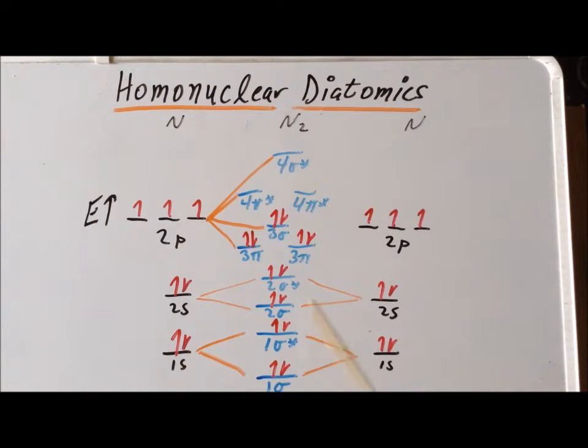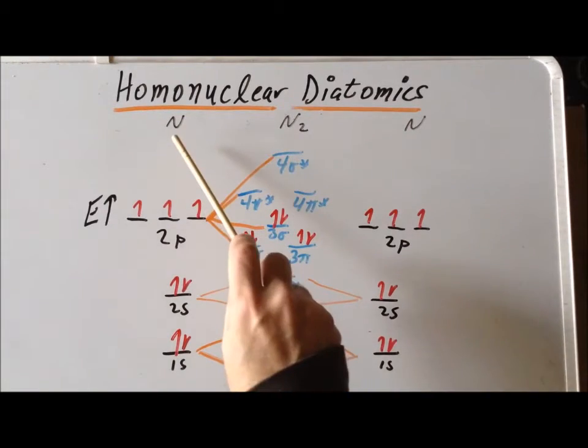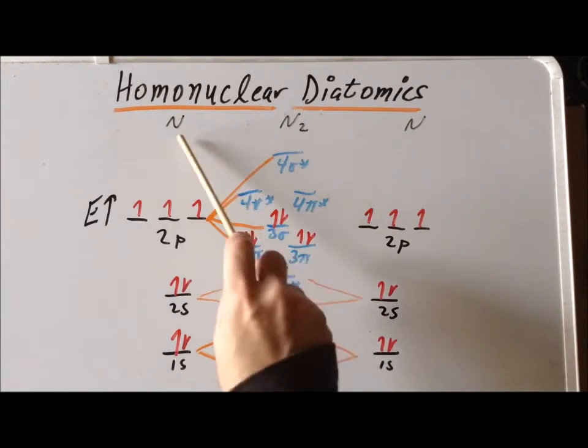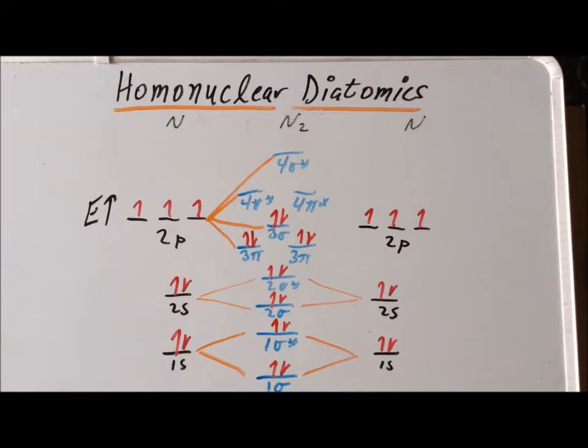But now we notice something. If we want to form the molecular orbitals the same way that we did for carbide, sigma, sigma star, that works the same way. Now we notice that if we add the total number of electrons in the system, we get 14. 14 is exactly the same number of electrons that we found in carbide ion.